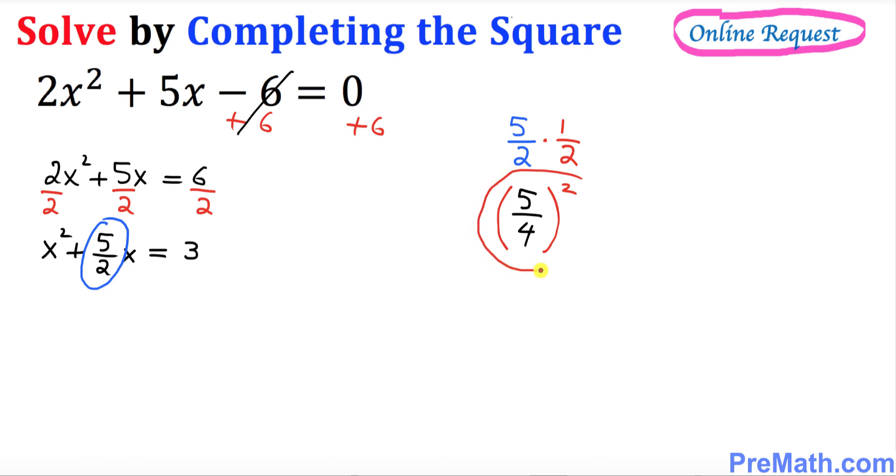I want you to add this quantity on both sides of this equation. Let's take care of that. I'm going to put down x² + 5/2 x + ... = 3 + ...